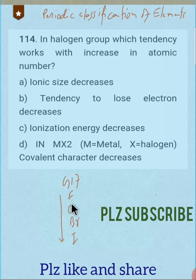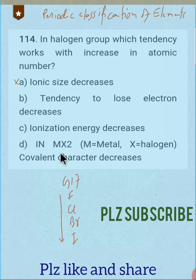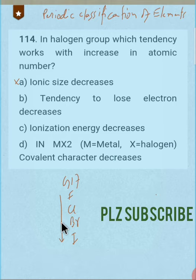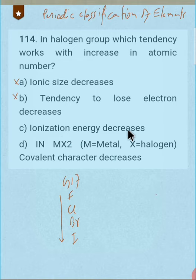The first option says ionic size decreases as we move down a group — but ionic size actually increases, so this is the wrong answer. The second option says tendency to lose electron decreases — but down a group, since size increases, tendency to lose electron increases, so this is also wrong. The third option says ionizing energy decreases.